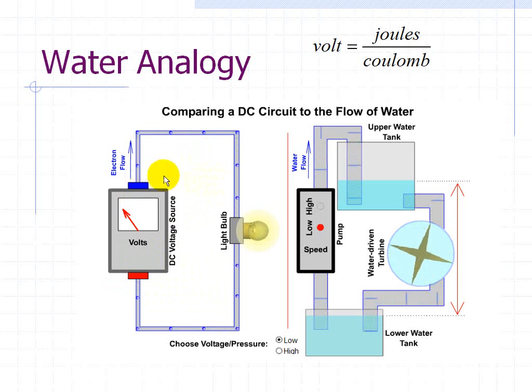In between these two terminals is a light bulb which can be modeled as a resistor. Here we're choosing the voltage and pressure to be low. So you can think of the voltage as water pressure.